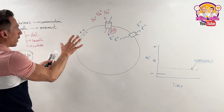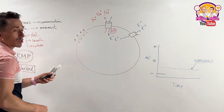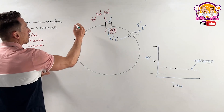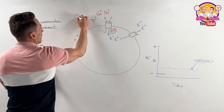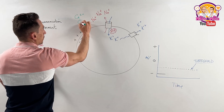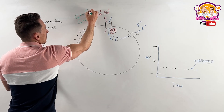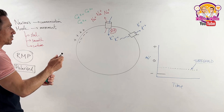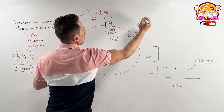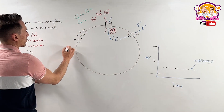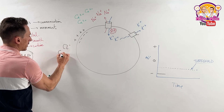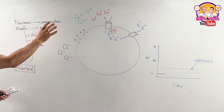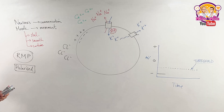So what could we do to make the cell hit the threshold and trigger it to do its thing? We know that outside we have most of our sodium, inside we have most of our potassium, and outside we also have most of our calcium. Outside we also have most of our chloride — our negatively charged chloride. These are the major ions you need to keep in mind.